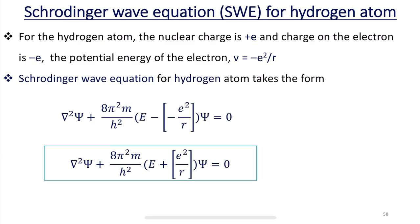This is where we stopped in our previous class. In this session, let us understand the Schrödinger wave equation for the hydrogen atom — simply called SWE for hydrogen atom. To understand this, it is essential to understand the structure of the hydrogen atom. The hydrogen atom consists of an electron and a proton.